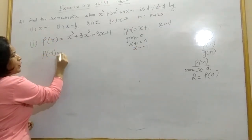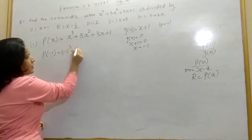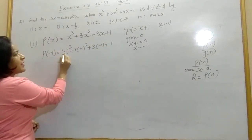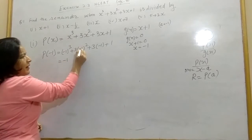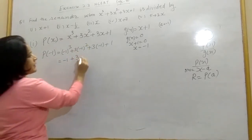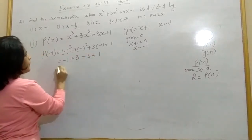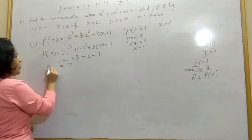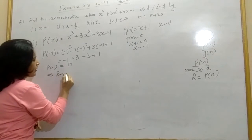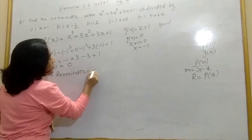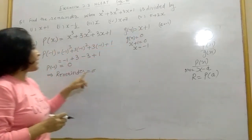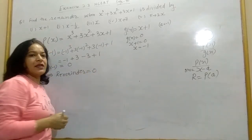p(−1) = (−1)³ + 3(−1)² + 3(−1) + 1 = −1 + 3 − 3 + 1 = 0. So the remainder is p(−1) = 0. If you verify this using long division, dividing by x + 1 will also give remainder 0.